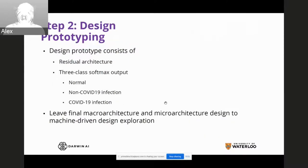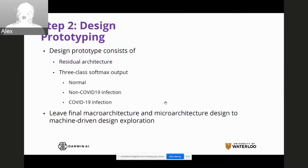Once we have the data, we start the design prototyping process, creating a rough scaffolding for the machine to learn from. We designed a very simple prototype consisting of residual architectures with three-class softmax output — normal, non-COVID-19 infections, and COVID-19 infections. We then pass this into the GenSynth machine-driven exploration process to find the final macro architecture and micro architecture catered completely to this particular task: COVID-19 detection and risk stratification.